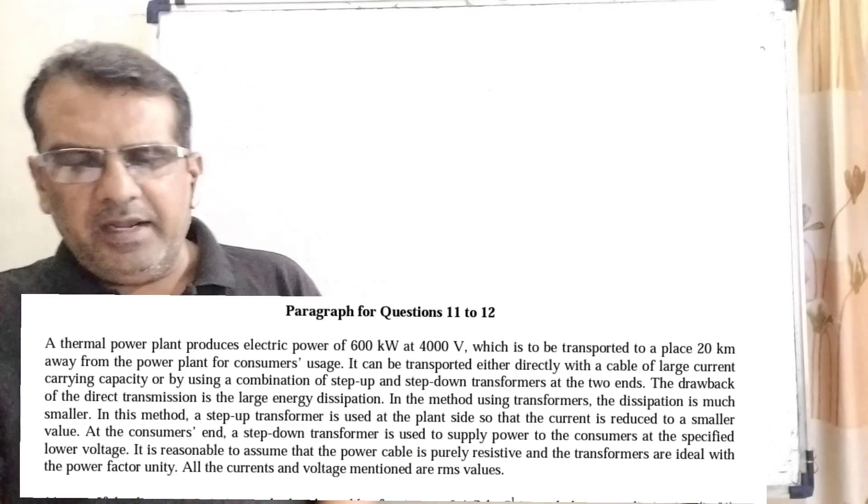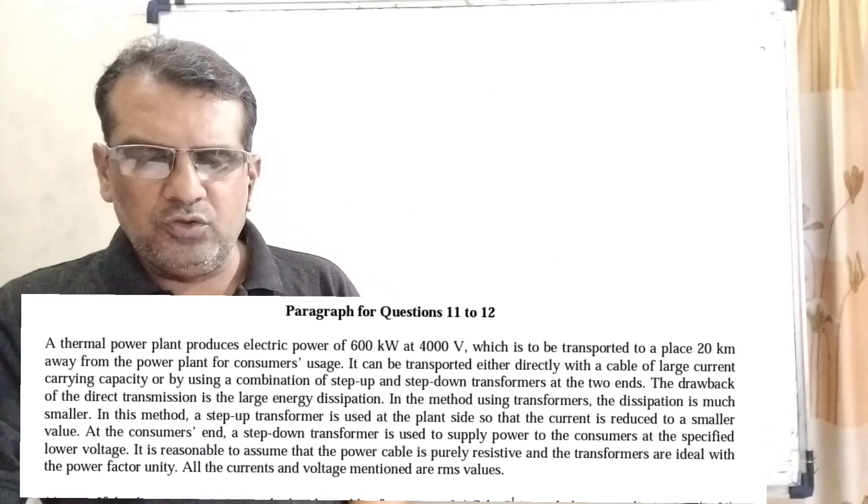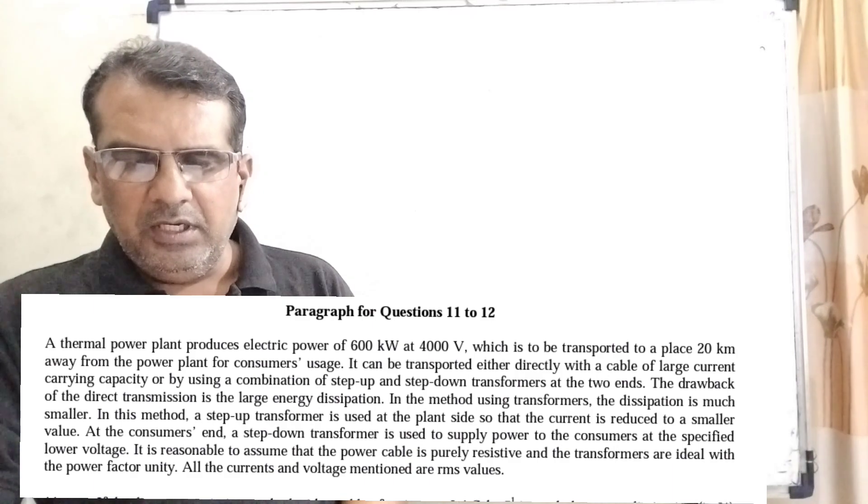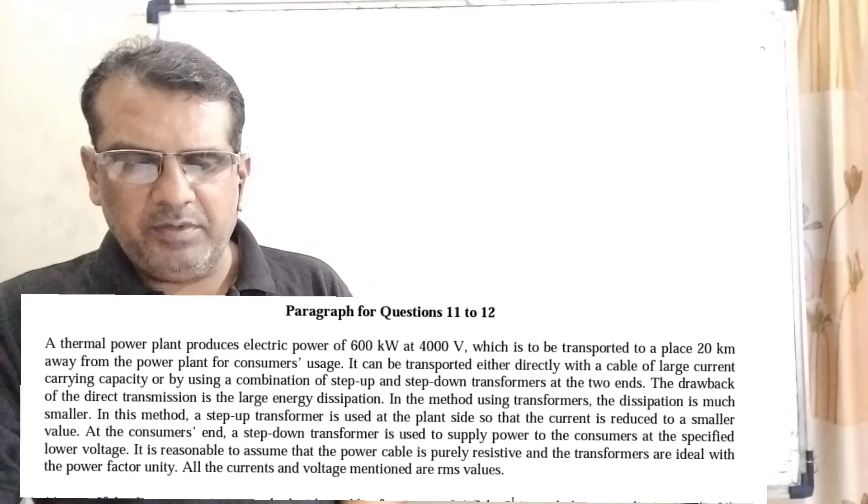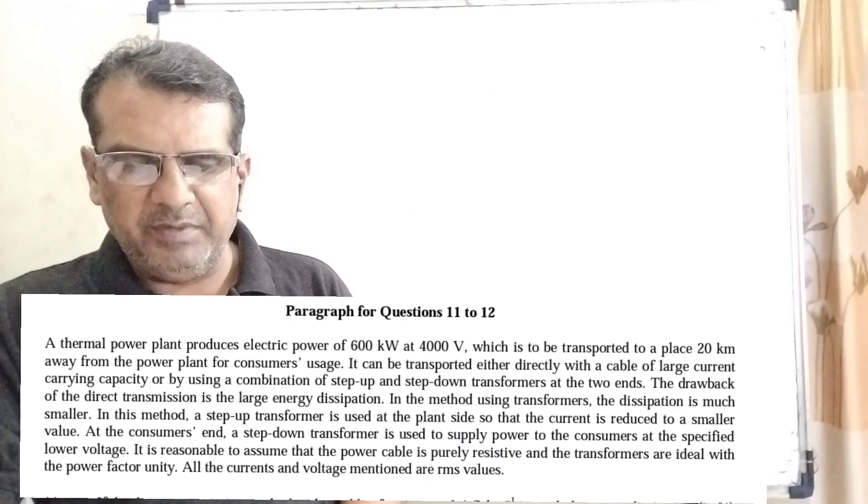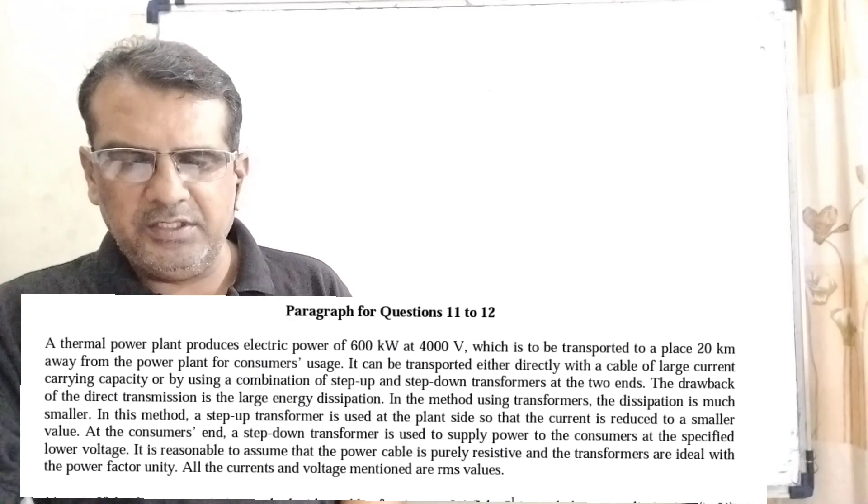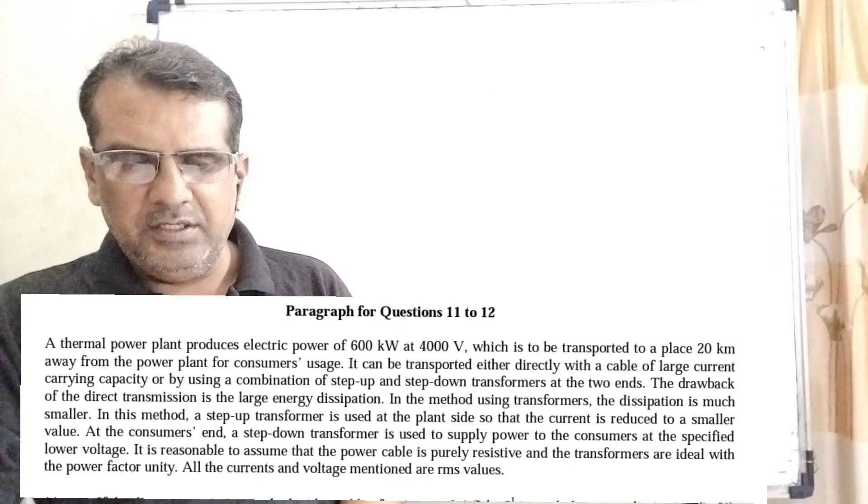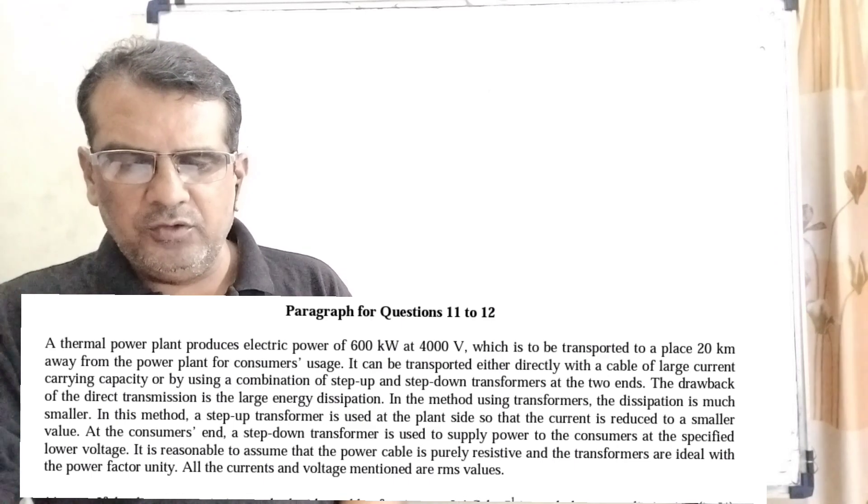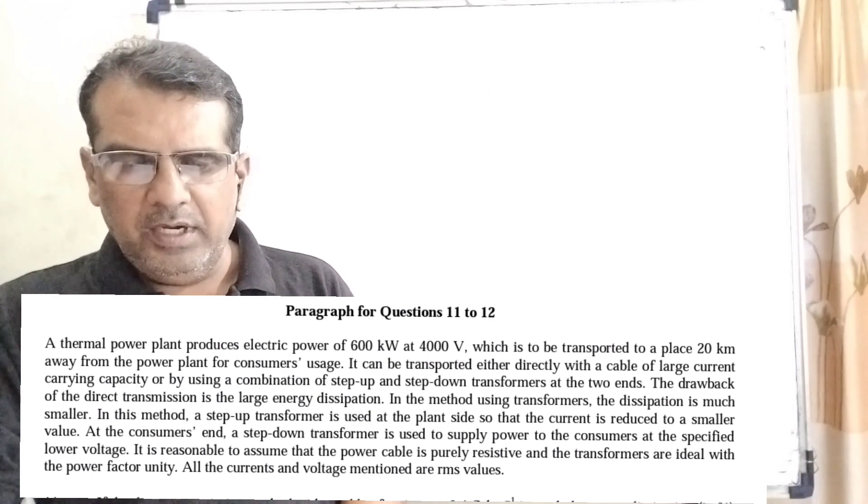The drawback of the direct transmission is the large energy dissipations. In the method using transformers, the dissipation is much smaller. A step up transformer is used at the plant side so that the current is reduced to a smaller value.